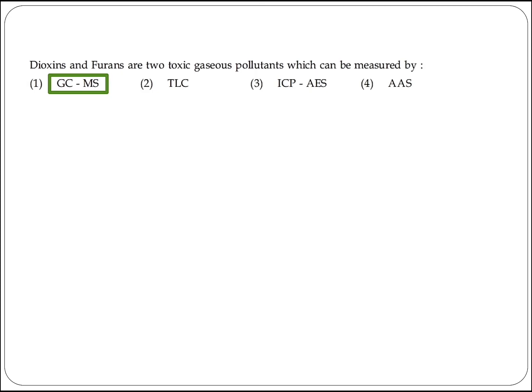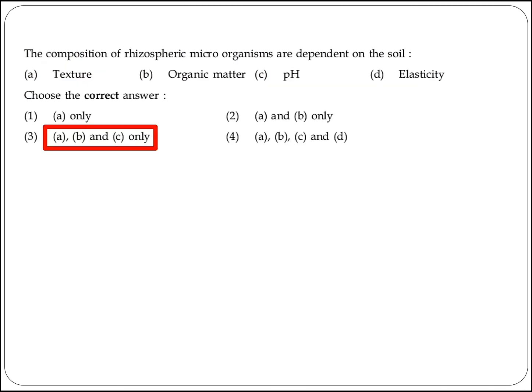Dioxin and furans are two toxic gaseous pollutants which can be measured by GC-MS (Gas Chromatography-Mass Spectrometry). Option 1 is the right answer.